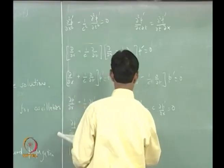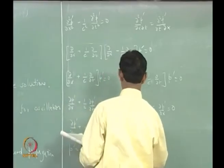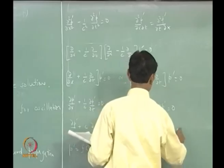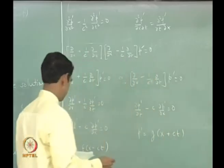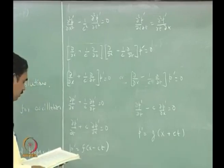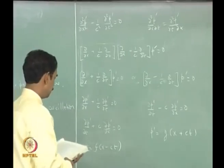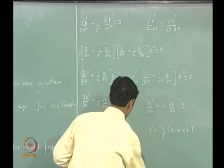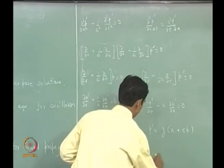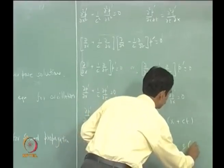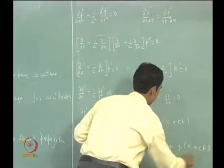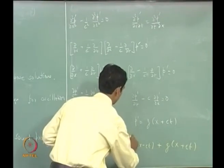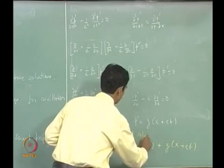The general solution is: p' = f(x − ct) + g(x + ct), where p' = f(x − ct) is one solution and p' = g(x + ct) is another. This would be the general solution.